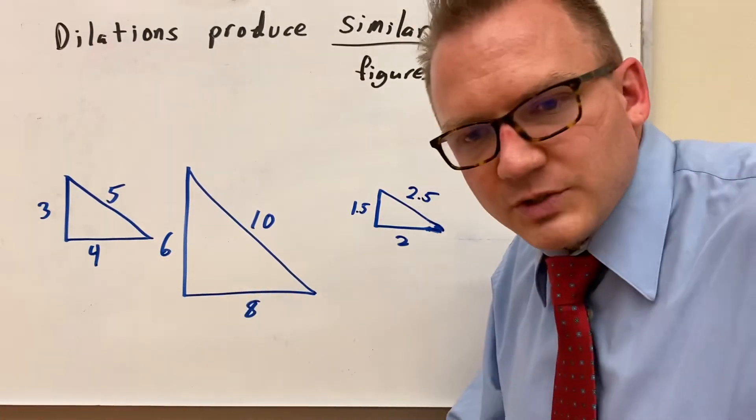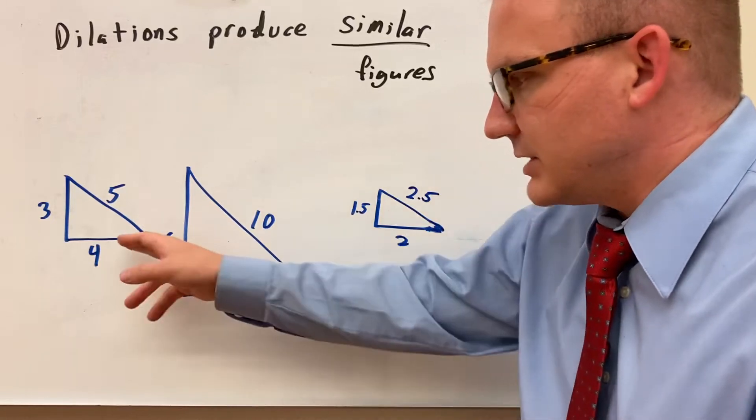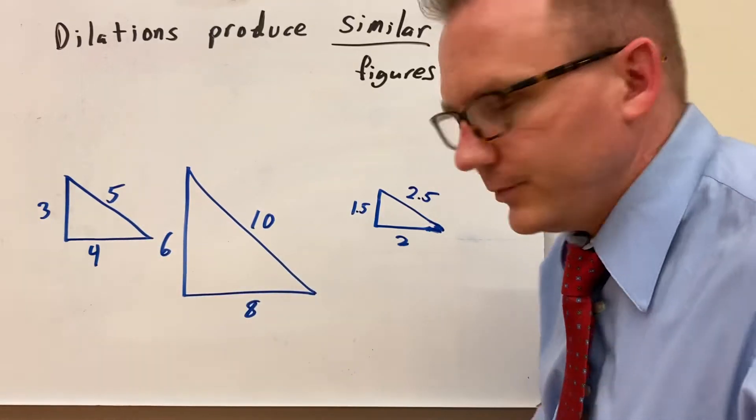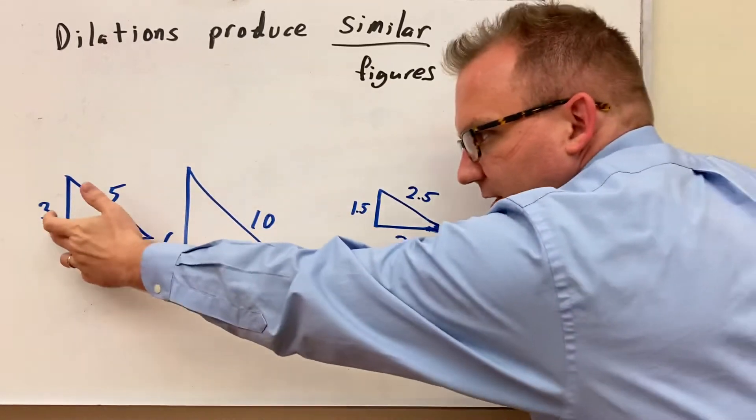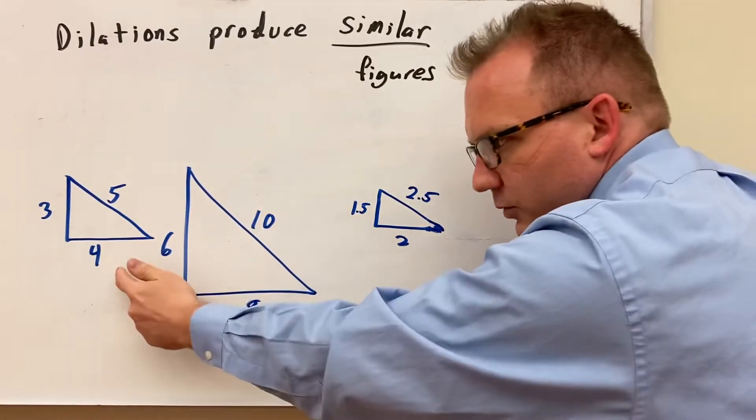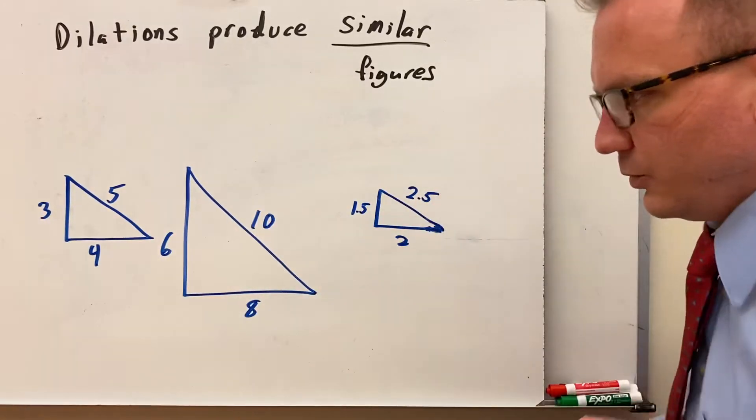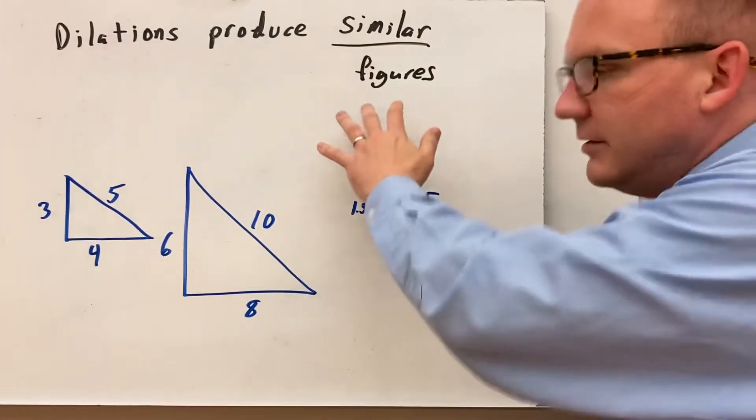One's just bigger or smaller but your angles end up being the same and your sides just are either larger or smaller than the other one. Another way is if you shrink it again it would be a similar figure because 3 divided by 2 is 1.5, 4 divided by 2 is 2, 5 divided by 2 is 2.5. And that makes them similar figures.